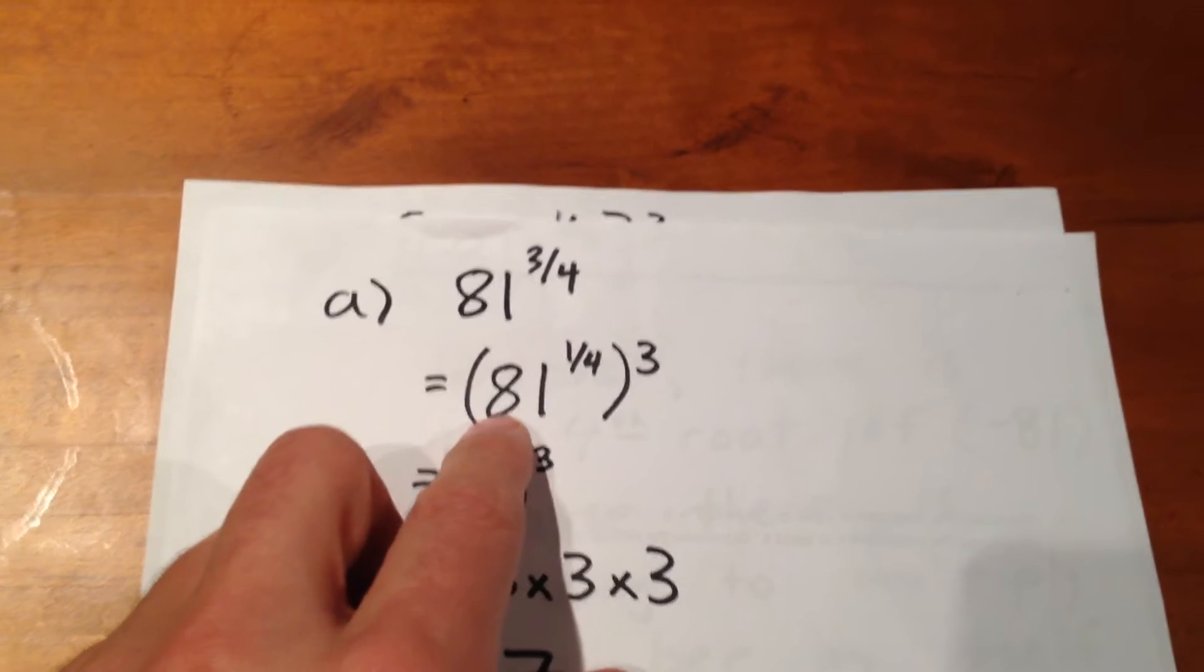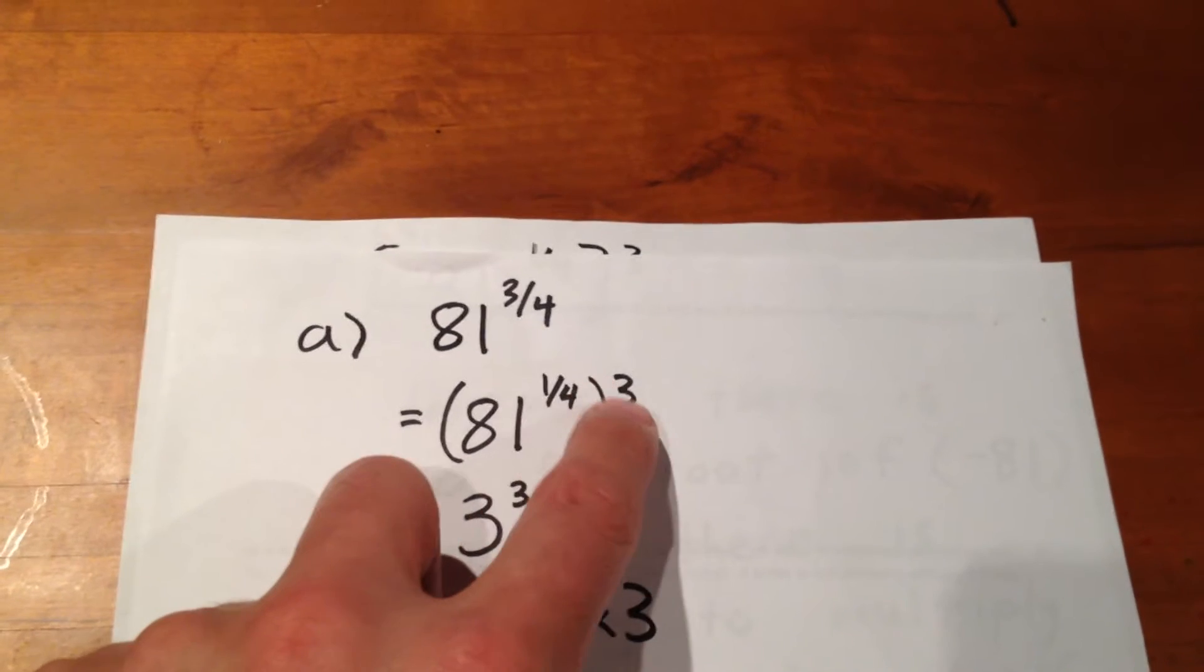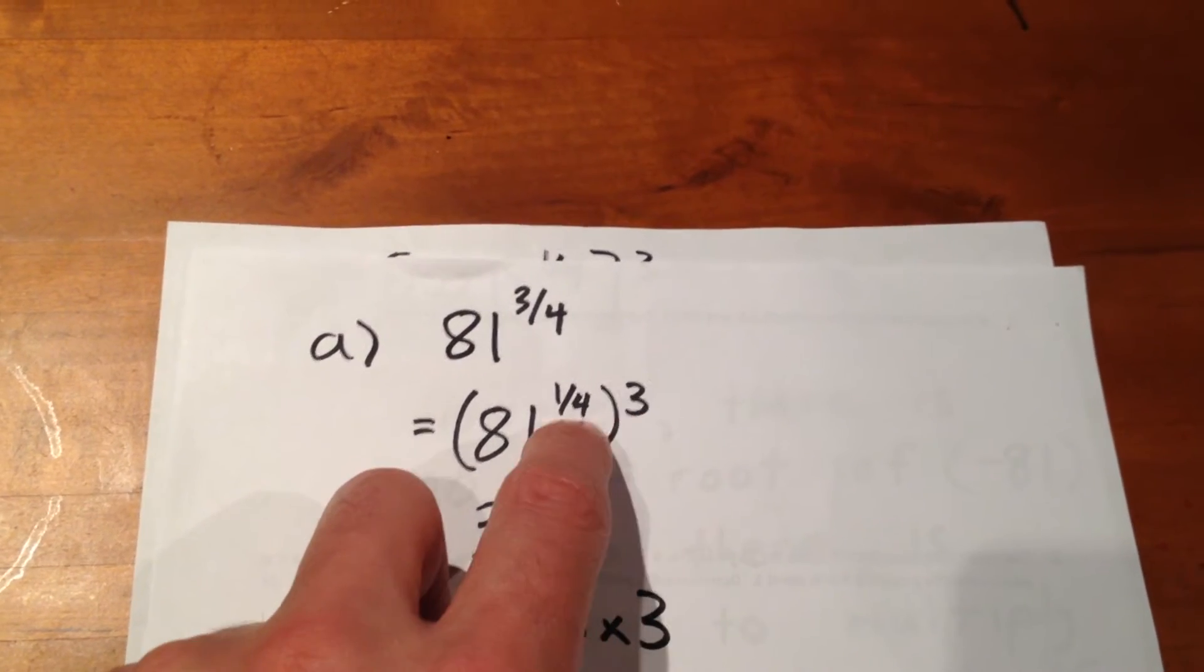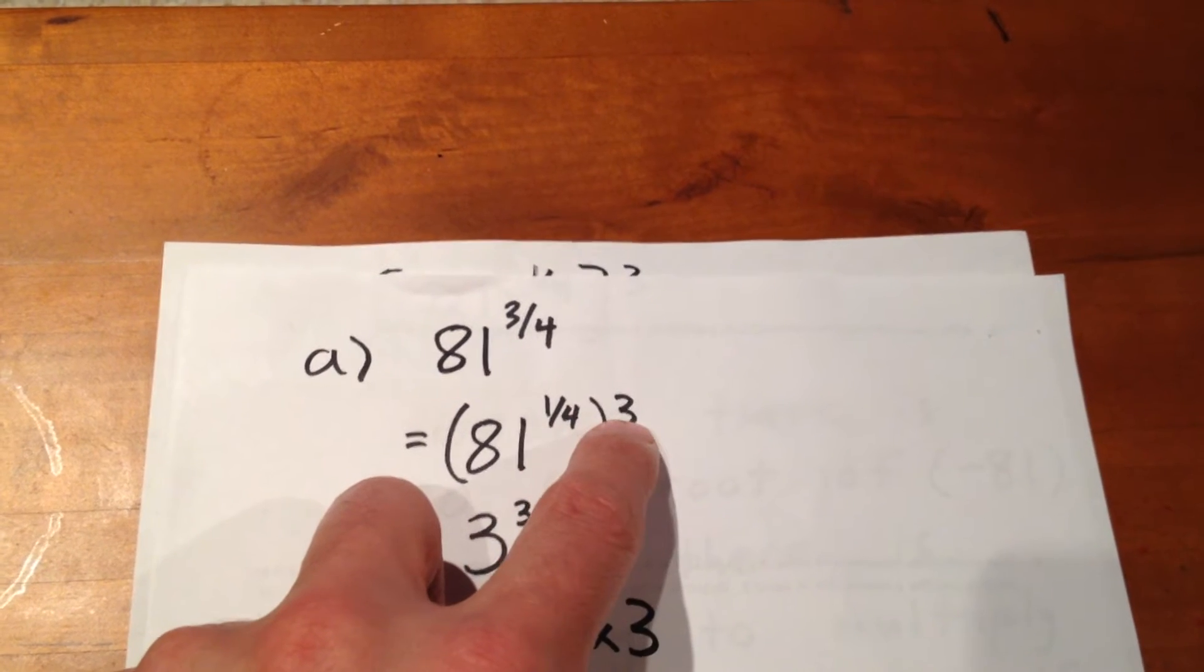So what we've done is made 81 to the 3 quarters equal to 81 to the 1 quarter, raised to the 3. We know from laws of exponents we multiply here, so that's why we're allowed to break that apart like we did.